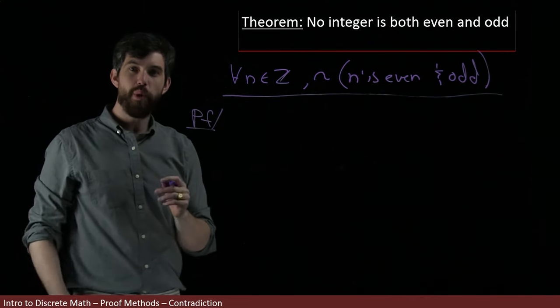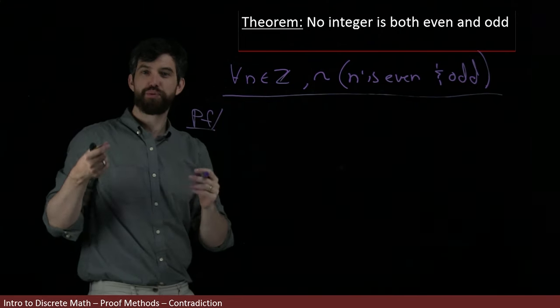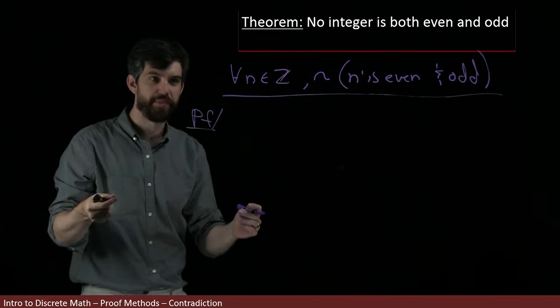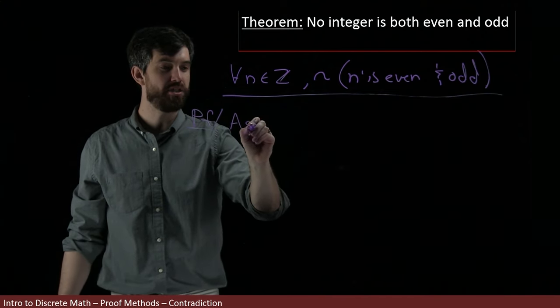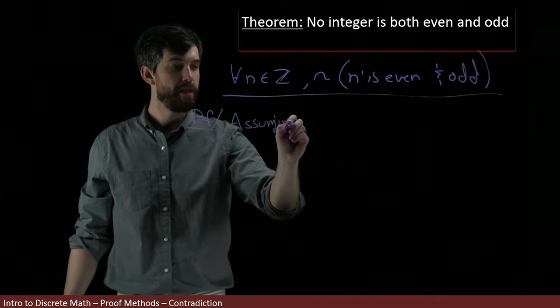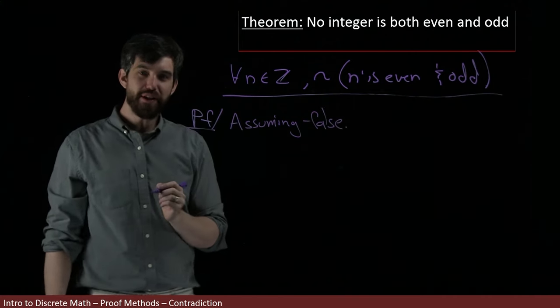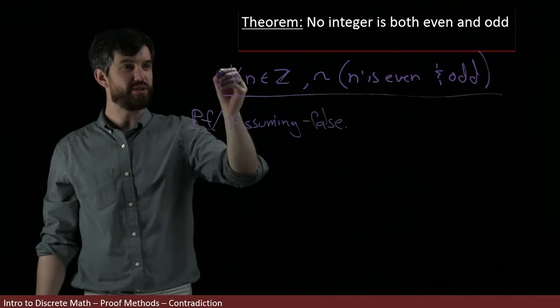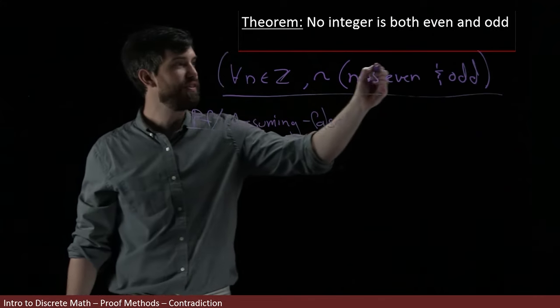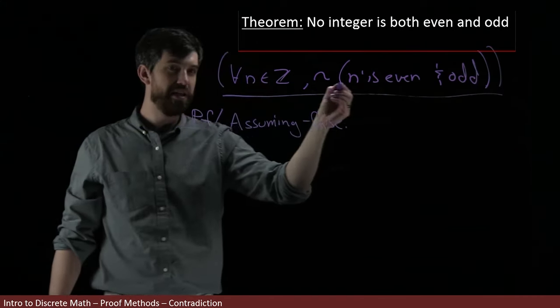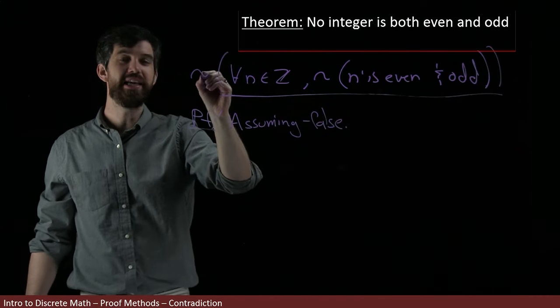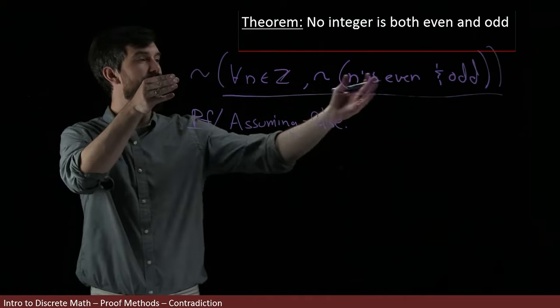We've decided that what we want to do is prove it by contradiction. So in other words, I want to begin by assuming that this is going to be false. And if I'm assuming that it's false, what I'm going to be doing is thinking that if this is my statement, that I'm going to be putting a negation in front of it. I'm assuming the negation.